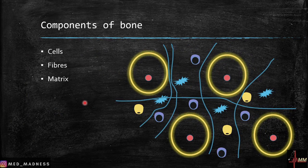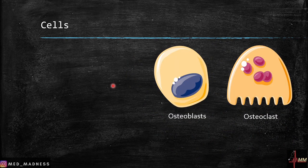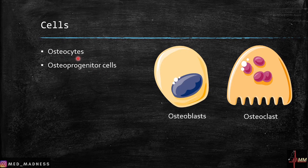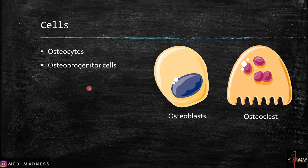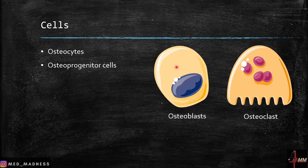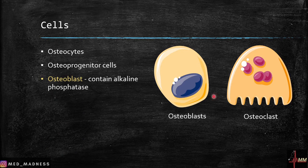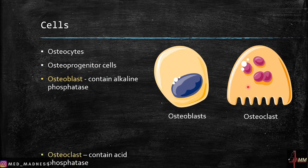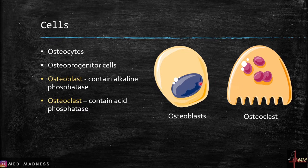The components of bone are cells, fibers, and matrix. There are at least four types of cells in the bones. Number one: osteocytes, which are the bone cells. Number two: osteoprogenitor cells, which are the stem cells present in the bones. The other two types are osteoblasts and osteoclasts. Osteoblasts are the bone-forming cells and contain an important enzyme called alkaline phosphatase. Osteoclasts are the bone-destroying cells and contain an important enzyme called acid phosphatase.